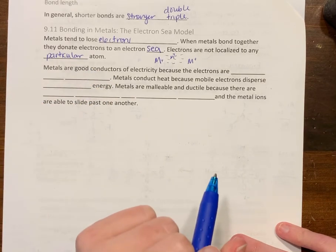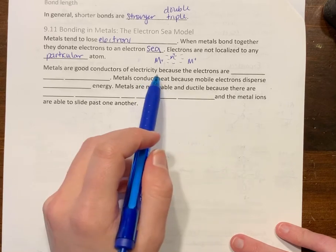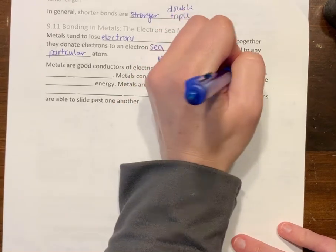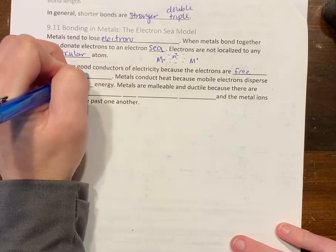Metals are good conductors of electricity. Why would that happen? Because in this sea, all these electrons are free to move.